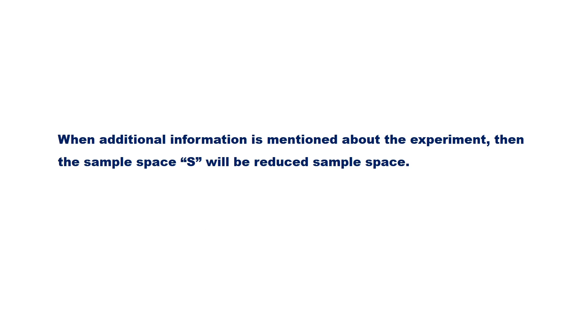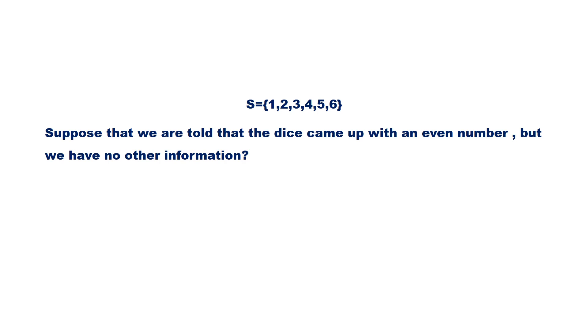When additional information is mentioned about the experiment, then the sample space S becomes a reduced sample space. Suppose we are told that the dice came up with an even number but we have no other information. Then the reduced sample space is {2, 4, 6}. Given an even number is rolled, what is the probability that it is 2? P(2|even) = 1/3.